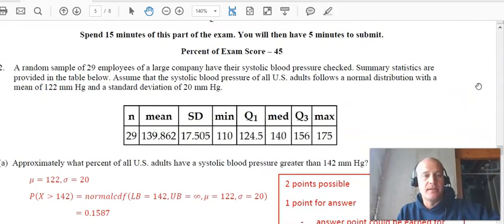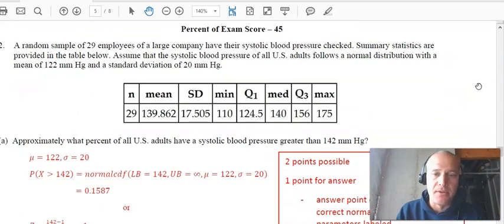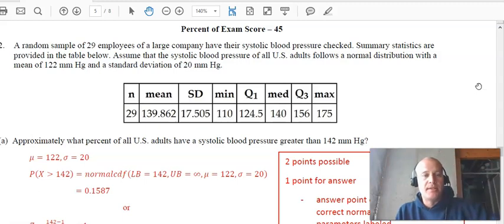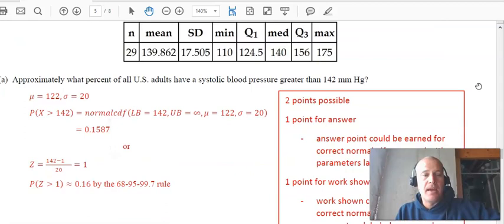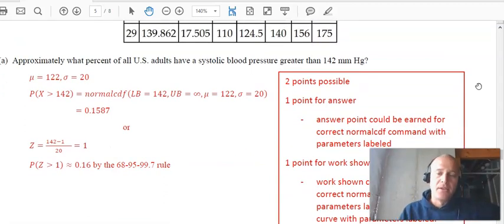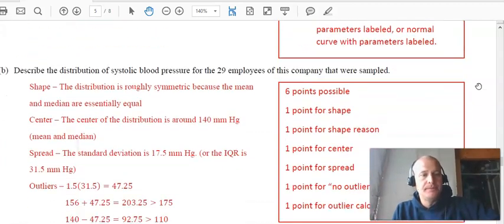All right. Second question, a random sample of 29 employees of a large company have their systolic blood pressure checked. The summary statistics are provided. And so this is going to require a calculator. To backtrack a little bit, they could ask you this question on the AP test and just provide, they might just ask you to provide the formula or the calculation you would perform with a calculator. So with a mu of 122 and a standard deviation of 20, we're going to just use our normal CDF, labeling what those three numbers represent and then actually four numbers and then get 16%.